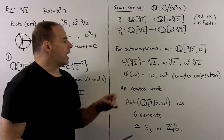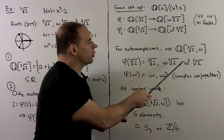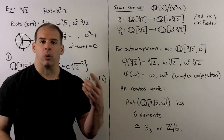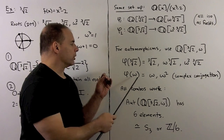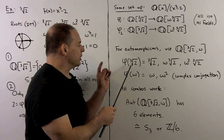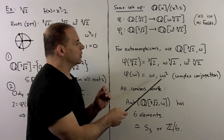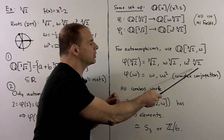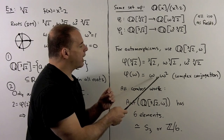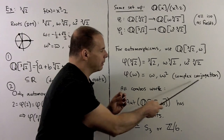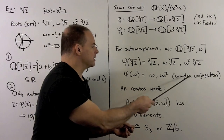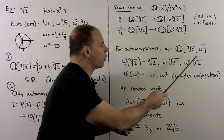To really get something useful, consider Q adjoined ∛2 and ω. For automorphisms of this field, looking at x³ − 2 and x² + x + 1: the cube root of 2 can go to ∛2, ω∛2, or ω²∛2, and ω can go to ω or ω². The case ω → ω² corresponds to complex conjugation. It turns out that any combination of these choices gives a field automorphism.